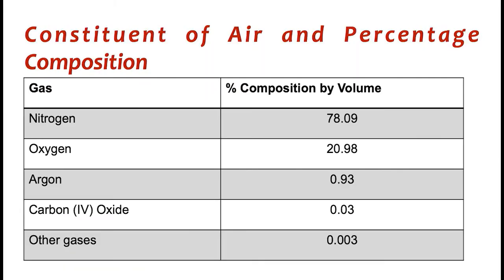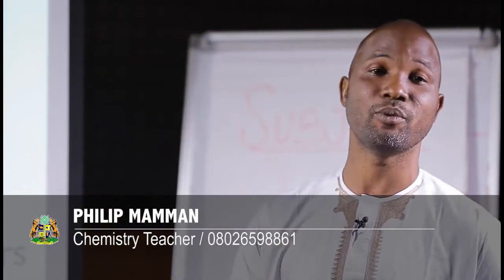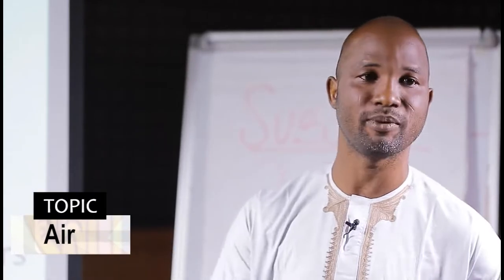Now, constituents and composition of air and their percentages. Air is made up chiefly of nitrogen. Nitrogen is about 78.909% of air by volume. Oxygen is the second to nitrogen, which is about 20.98%. By approximation, we say it is 21%. Argon and other rare gases fall under 0.93%. Carbon dioxide is 0.03%, and other gases 0.003%. Of course, you do not expect this to be uniform everywhere.